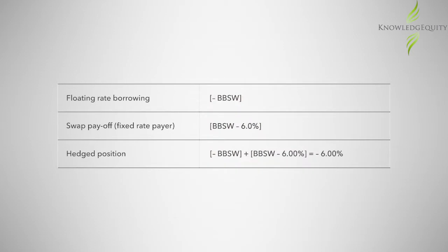The cash flows can be summarized as follows. The floating rate of the borrowing is the reference rate. The swap payoff on the fixed rate pair is the BBSW less six percent. The hedge position is always a fixed rate since this is a fixed rate pair, which in this case is six percent.